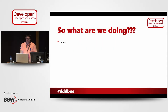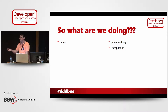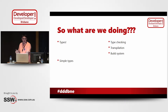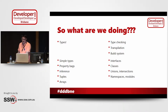So what are we actually going to do today? We're going to talk about types — it is TypeScript after all. That means we're going to look at some type checking. We're going to look at transpilation, how TypeScript can compile your code. We're going to have a look at how you can configure some of the build stuff. And then we're going to get into all the types of types: simple types, property bags, type inference, tuples, arrays, interfaces, classes, union types, intersection types — where it starts getting a bit fun.